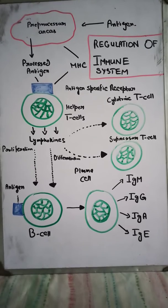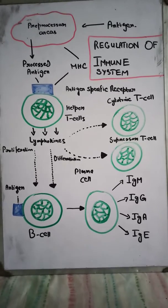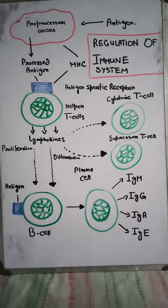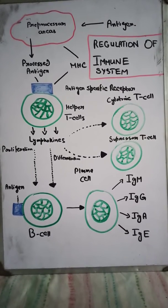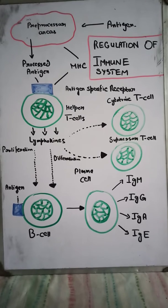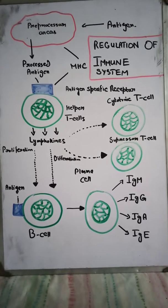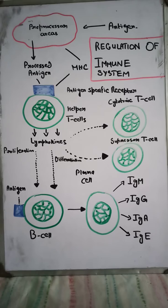As we know, we have two major systems: cell-mediated immunity and humoral immunity. Cell-mediated immunity leads to helper T-cells, cytotoxic T-cells, and suppressor T-cells, while humoral immunity consists of B-cells and antibody formation. Both systems play a major role in the maintenance and regulation of the immune system.